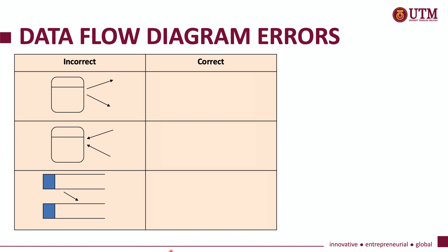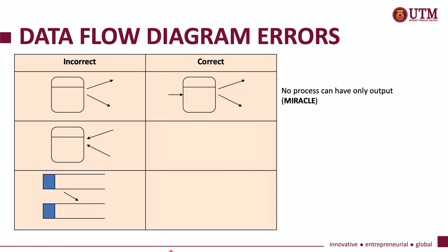These are some of the common data flow diagram errors. The first error, as you can see in the figure, is what we call a miracle, meaning that the process only has an output data flow. To correct this error, make sure that there is both an input data flow and an output data flow for the process.